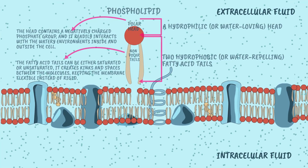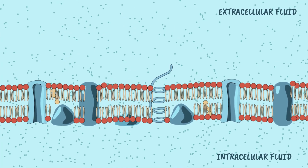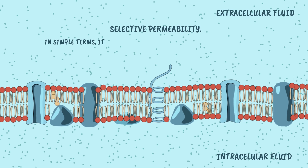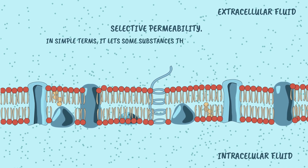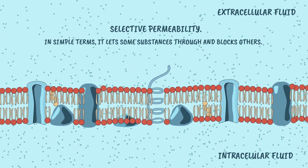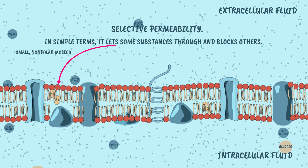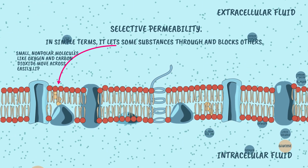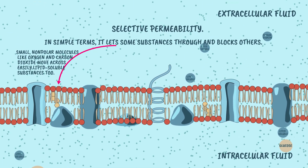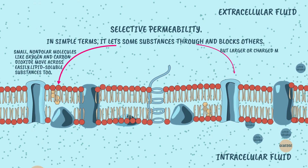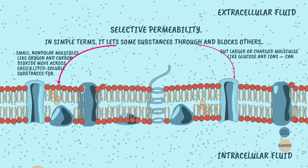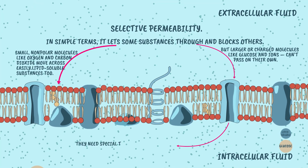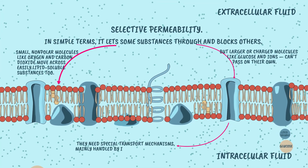This structure gives the membrane one of its most important properties: selective permeability. In simple terms, it lets some substances through and blocks others. Small, nonpolar molecules like oxygen and carbon dioxide move across easily, as do lipid-soluble substances. But larger or charged molecules, like glucose and ions, can't pass on their own — they need special transport mechanisms, mainly handled by integral membrane proteins.